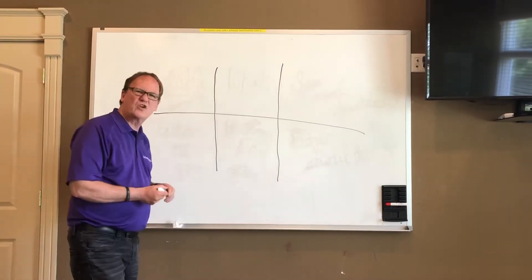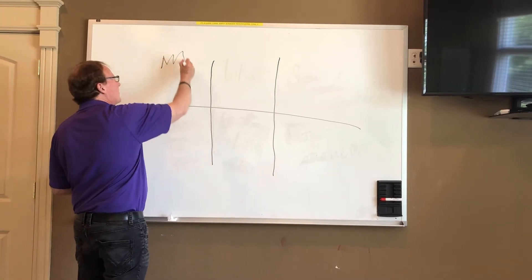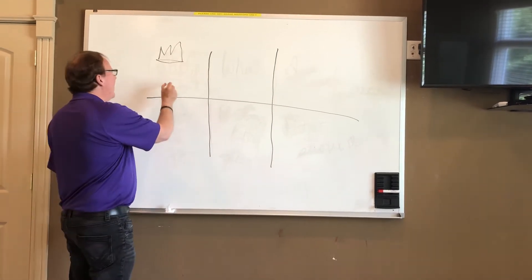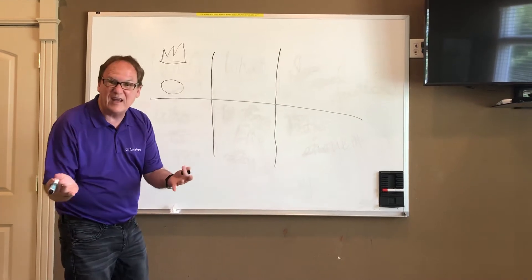In answer to the question, where did this stuff come from? The Christian response is that there is a God. He's king, he's sovereign, he's ruler over all. Pictured by a crown. And there is a universe pictured by a circle. And God created it.